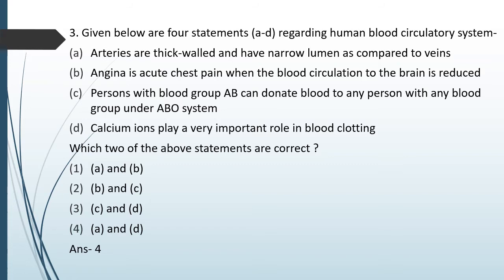Arteries are thick-walled and have narrow lumen as compared to veins, and calcium plays a very important role in blood clotting. Angina is acute chest pain, but it occurs when blood circulation to the heart is reduced, not the brain. Regarding Option C, blood group O is the universal donor, not AB.